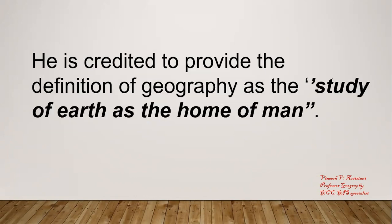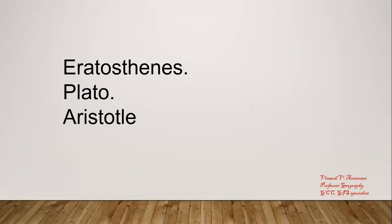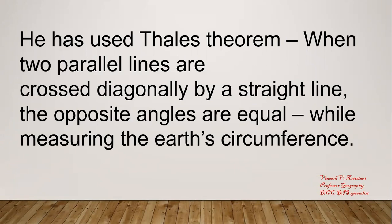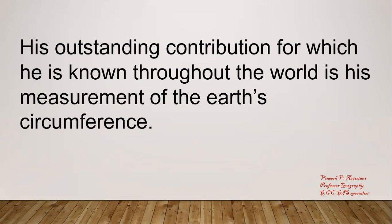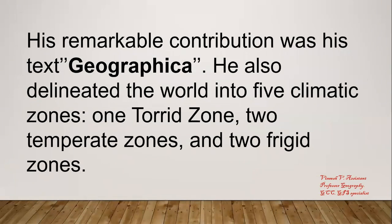I will show a diagram that depicts how he measured the circumference of the Earth — that is his major contribution. He used Thales' theorem: when two parallel lines are crossed diagonally by a straight line, the opposite angles are equal. His remarkable contribution was also his text 'Geographica.' He also delineated the world into five climatic zones: one torrid zone, two temperate zones, and two frigid zones.